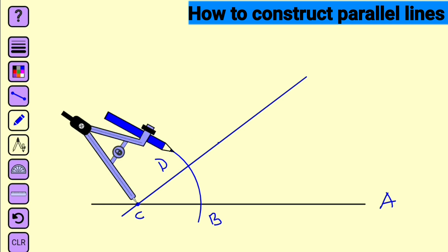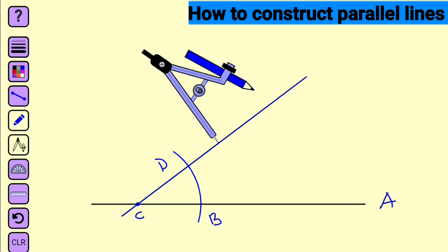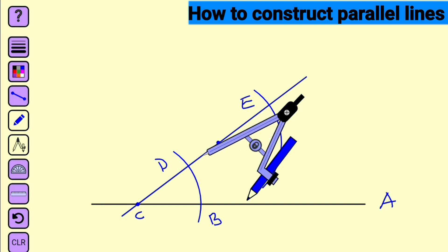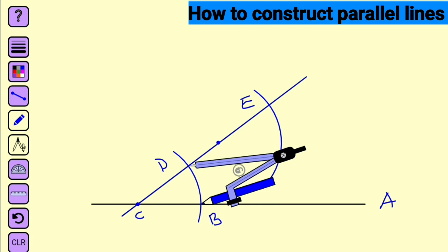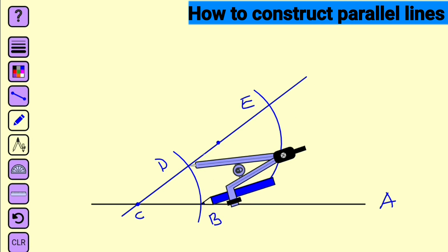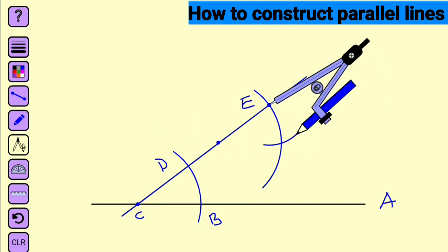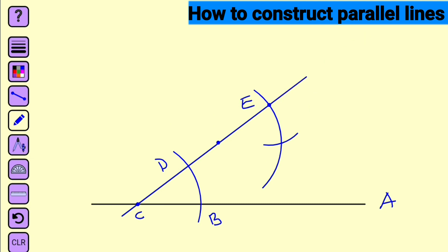Bring out your compass at the same radius — do not extend it. Take it to the initial point you have located and construct an arc to cut this blue line. Name that intersection E. Now we are going to measure the length of arc BD using our compass. Take your compass to point E and replicate the length you have copied. Name that point F.